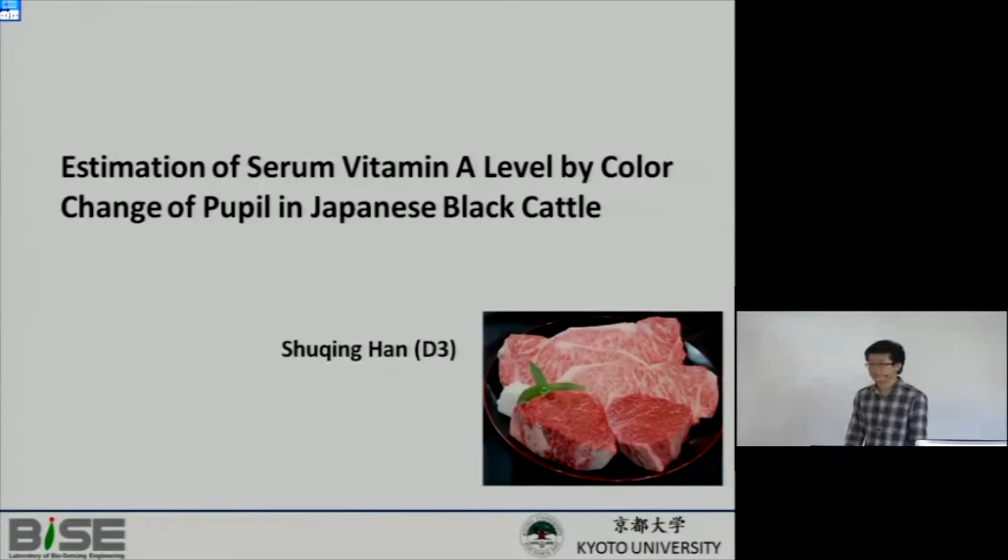Good afternoon everyone and welcome to my presentation. Today my topic is estimation of vitamin A level by color change of pupil in Japanese black cattle. As you may know, the cattle group's objective is to estimate vitamin A level by observing the change of the cattle's eye to produce high-quality beef. Today I only focus on the color.